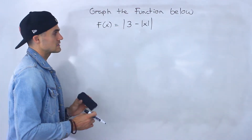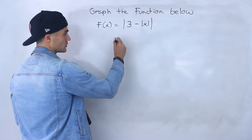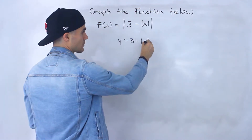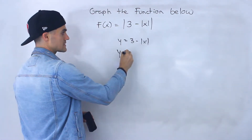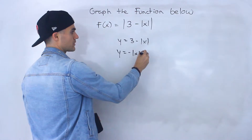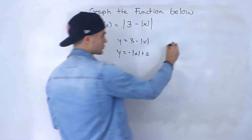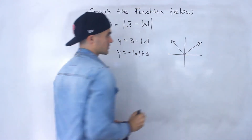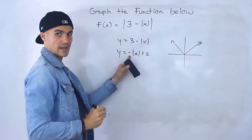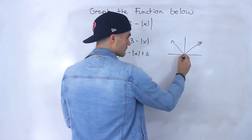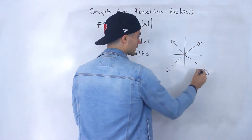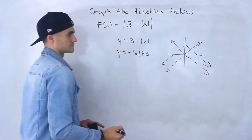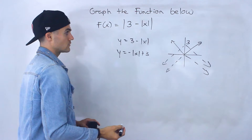Let's try the simple method first. I'm going to take 3 minus the absolute value of x and graph that. Notice we can rewrite this as negative absolute value of x plus 3. So we apply simple transformations to the absolute value of x, the parent function. We're going to reflect it in the x-axis — the a value is negative — which looks like this. Then we shift it up by 3, so the vertex will be at a y value of 3.